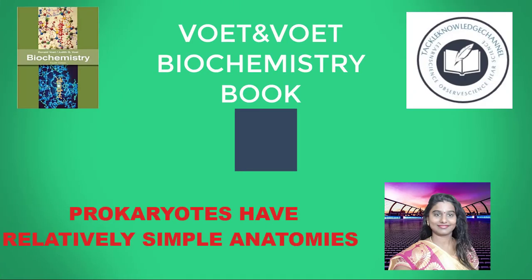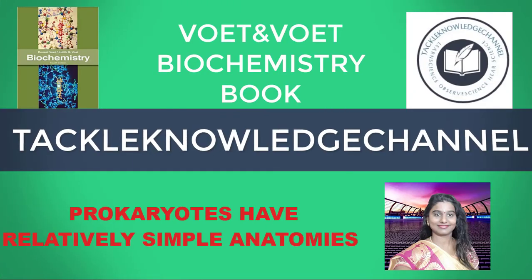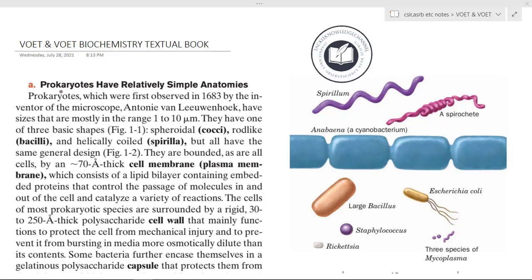Hi friends, welcome to Tackle Knowledge channel. Let's continue with the White and White Biochemistry textbook. Today we are going to see: prokaryotes have relatively simple anatomies. Prokaryotes were first observed in 1683 by the inventor of the microscope, Antony van Leeuwenhoek, and have sizes mostly in the range of 1 to 10 micrometers.